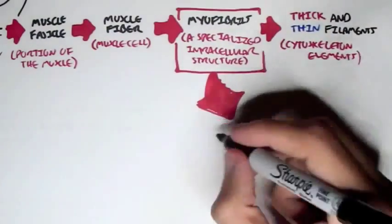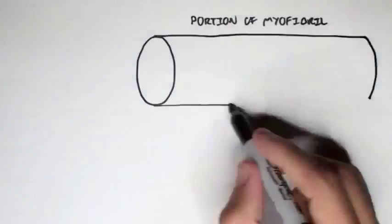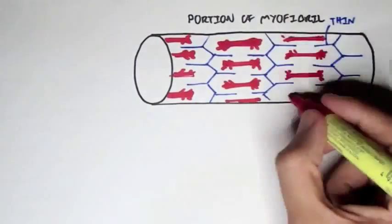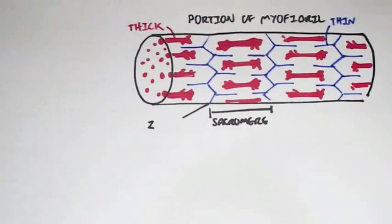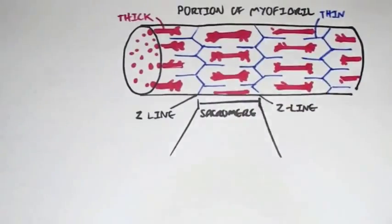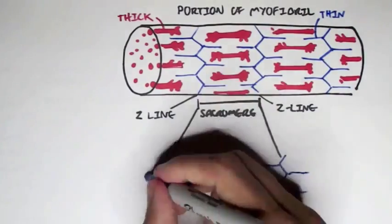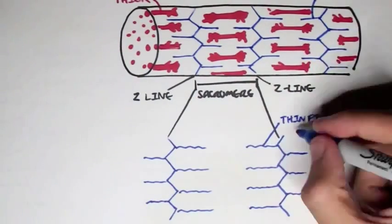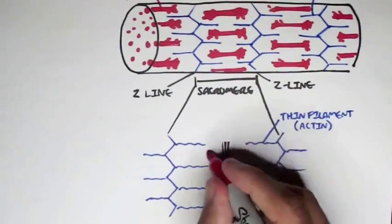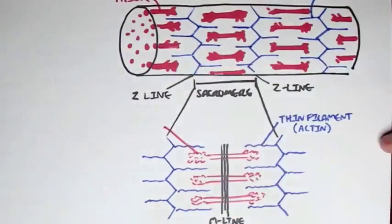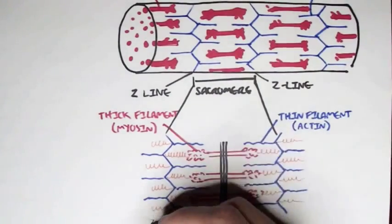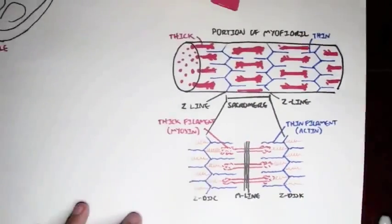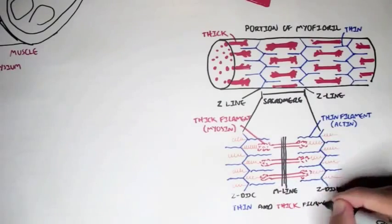We're concentrating on the myofibrils, the specialized intracellular structures of the muscle fiber, and specifically a portion of the myofibrils. They all contain the thin filament in blue and the thick filament in red. An important terminology to know is the sarcomere. A sarcomere runs from one z-line to another z-line — from one thin filament z-line to another thin filament z-line. Zooming into one sarcomere, we have the thin filaments made up of actin, and the center of the sarcomere is called the M-line. From the M-line in the center, we have the thick filaments, which are made up of the protein myosin.